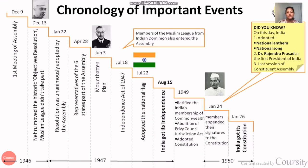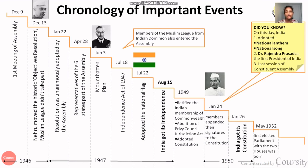After 26th January 1950, India got its Constitution and finally achieved full independence. Before that, after 1947 and until 1950, India was under dominion rule. Lord Mountbatten was the Governor General of India. Once we got the Constitution, we got our own regulations about how to run the country and became fully independent.